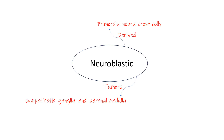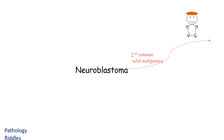Welcome to Pathology Riddles. Today we will be dealing with the topic of neuroblastoma. Neuroblastoma consists of neuroblastic tissue which includes sympathetic ganglia and adrenal medulla. These are derived from primordial neural crest cells, and it is the second most common solid malignancy of childhood after brain tumors.